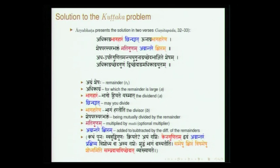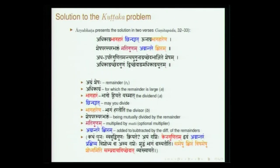You can stop the division at any stage — if you carefully analyze the algorithm, it is a very beautiful algorithm. Mati gunam — multiply by mati — this is called an optional number. Agrantharek shiptam: agra refers to remainder, agranthara is the difference of the remainders, denoted as C, where C refers to r1 minus r2. Kshiptam is referring to either addition or subtraction — we understand which from the commentaries.